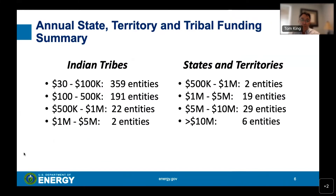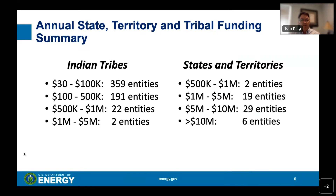You can see the allocations for states, territories, and tribes summarized here. With Indian tribes, the minimum amount is $30,000, with about 359 entities in the $30,000 to $100,000 range and 191 entities in the $100,000 to $500,000 range. We are continuing to improve the formula grant process, taking information received from the RFI, and annually we want to improve our data collection process and modify this formula accordingly.